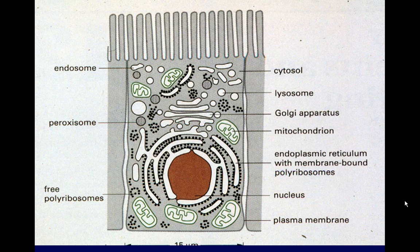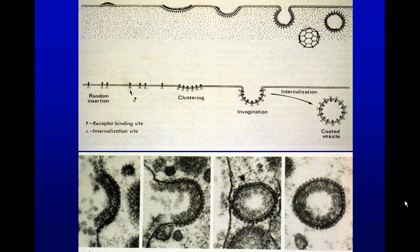Looking at an intestinal absorptive cell, we see a brush border on the surface. The cytosol is what's inside the plasma membrane — not the nucleus or the endoplasmic reticulum. We can see rough endoplasmic reticulum, rough because of the ribosomes on the surface, smooth ER, Golgi apparatus, polyribosomes, free ribosomes, peroxisomes, nucleus, and a plasma membrane.